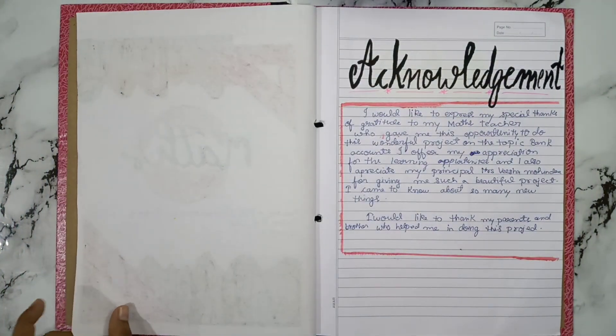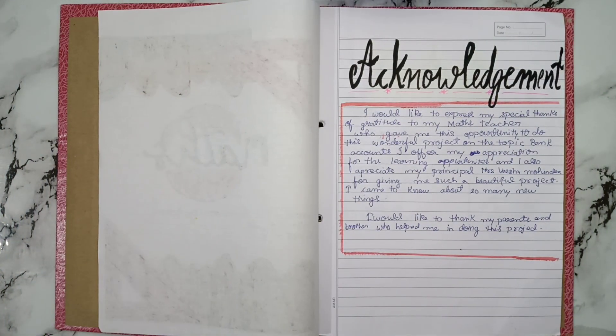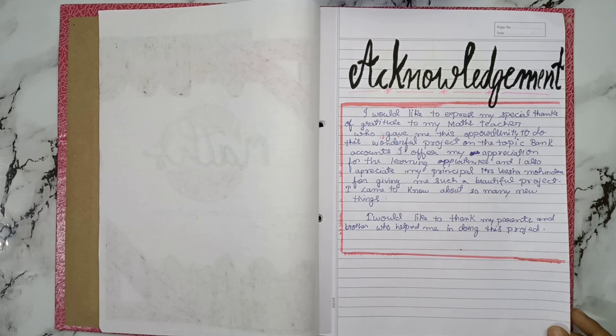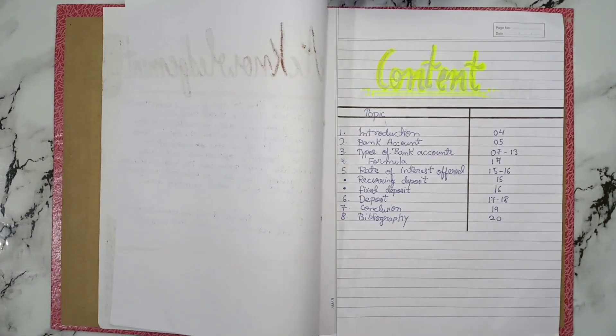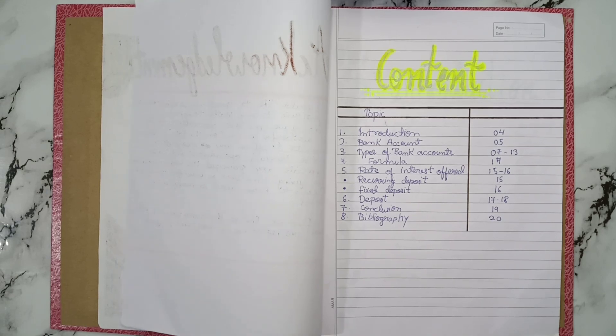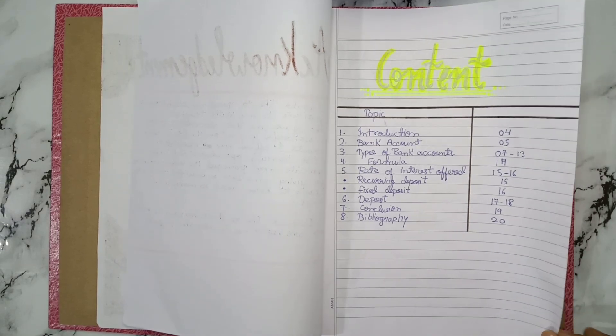The topic was survey of various types of bank accounts and rate of interest offered. So this is the acknowledgement. Next we have content. You can see all the topics included in this.